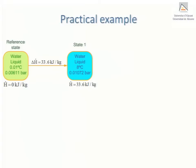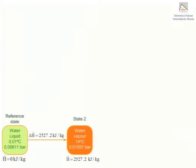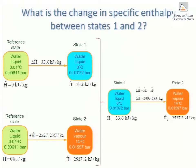The specific enthalpy of water vapour may also be read directly from the steam table, and note that the reference state remains unchanged — it is still the triple point of water. For instance, the enthalpy of water vapour at 14°C and 0.01597 bar is 2527.2 kJ/kg. Since the enthalpy data in the table are all referred to the same reference state, it is very easy to calculate the change in specific enthalpy between state 1 and state 2 by simply subtracting the specific enthalpy of state 1 from that of state 2.